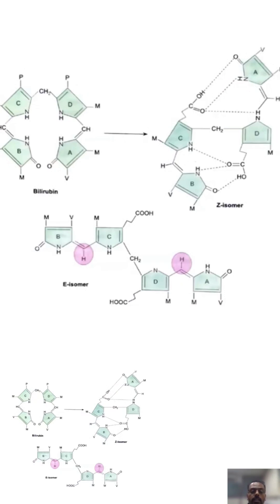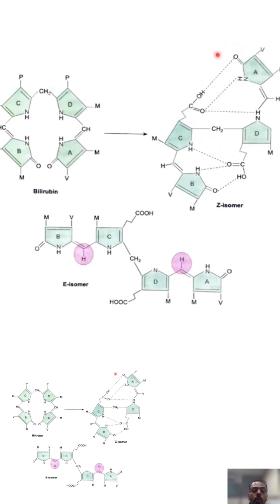In neonatal jaundice, bilirubin is present mainly in the Z isomer form. This Z isomer is mainly toxic and water insoluble. It is water insoluble because the Z isomer exists in a conformation that allows intramolecular bonding, favoring hydrophobic properties.